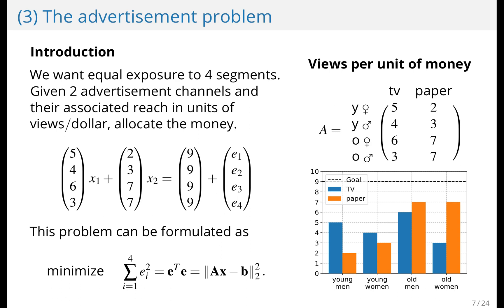The advertisement problem. Imagine that you're a company and you would like to reach four subpopulations: young women and young men and old women and old men. And for each dollar that you spend you get an amount of views or impressions. So the TV and the newspaper might have different profiles, and you would like to spend your money so that you reach all four subpopulations equally well. One way to formulate this as an optimization problem is to define an error and then you minimize the sum of the squared errors.